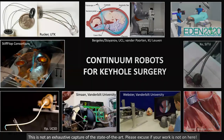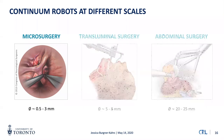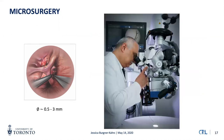I want to talk about the research in the Continuum Robotics Laboratory addressing these challenges at different scales. We address three scales common in surgery: microsurgery, transluminal surgery through natural orifices, and abdominal surgery. For microsurgery, tools should have a diameter of about 0.5 to 3 millimeters. A common example is neurosurgery, shown here with a conventional microscope and one of my collaborators, Professor Nabavi from Hanover.